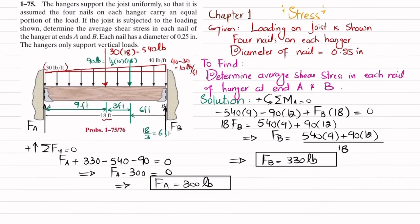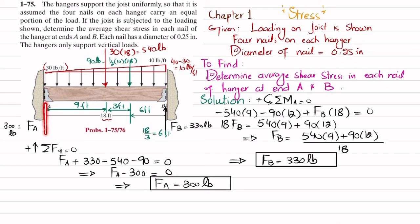So F_A equals 300 pounds and F_B equals 330 pounds. There are four nails in each hanger support, and the vertical reaction force causes shear in those nails.